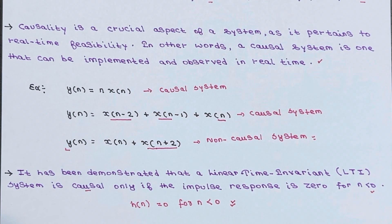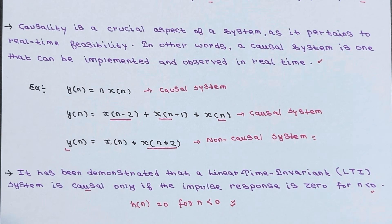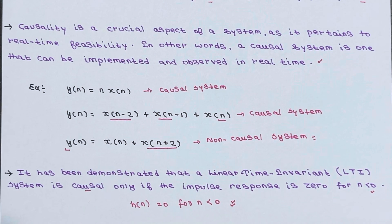One more point: a delay element is a causal system, whereas an image processing system is a non-causal system. These are practical examples to illustrate the difference between causal and non-causal systems.